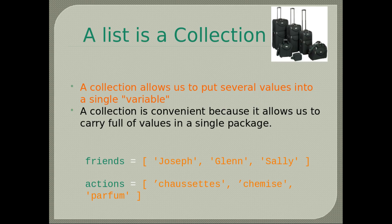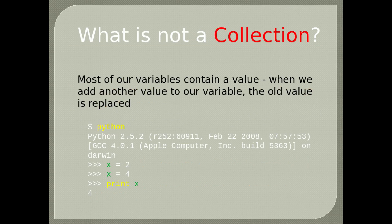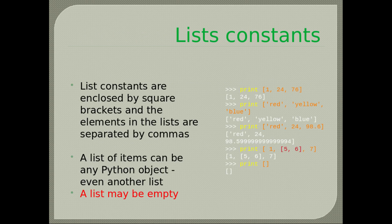Python lists: a list is a collection. A collection allows us to put several values into a single variable and carry a full set of values in a single package. Most variables contain a single value — when we add another, the old is replaced, so a variable alone is not a collection. List constants are enclosed by square brackets and elements are separated by commas. A list element can be any Python object, even another list. A list may be empty.